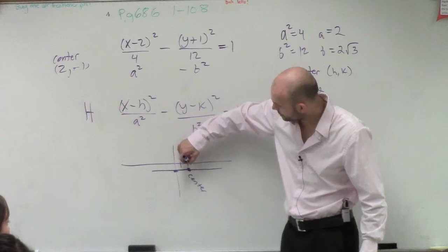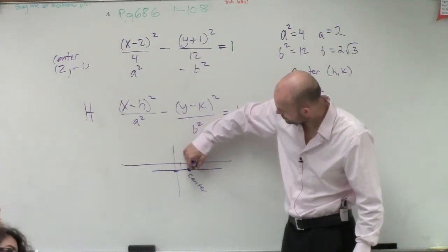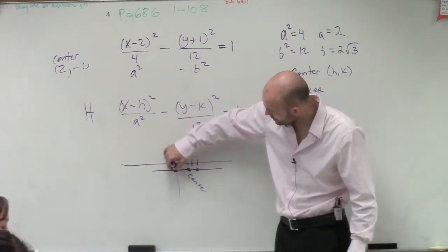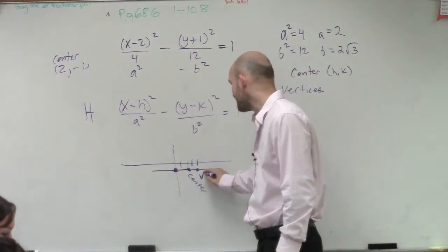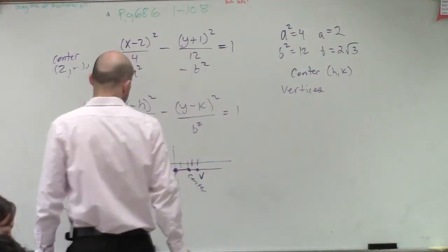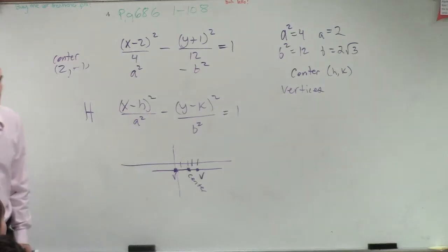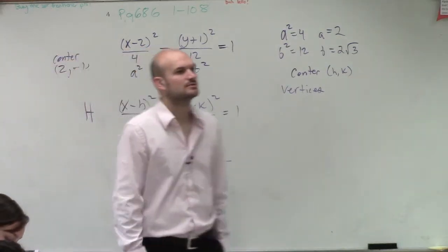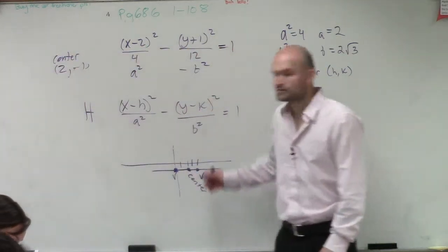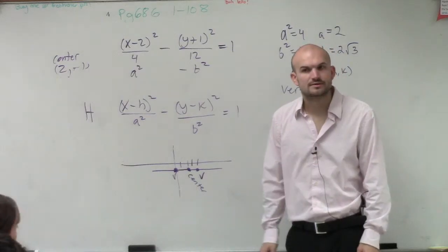So therefore, I'm going to go over two more units to the right and I'm going to go two units to the left. Now what I have just found out are my two vertices. Does that make sense, Kristen? OK. So you've figured out your two vertices. All right?